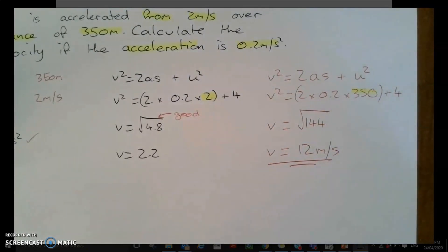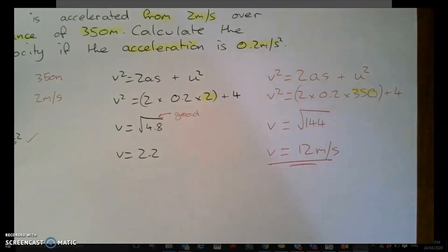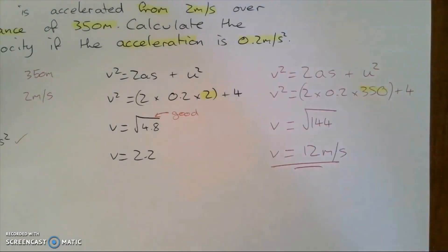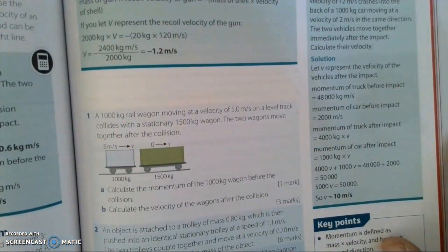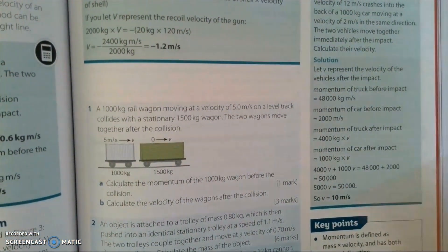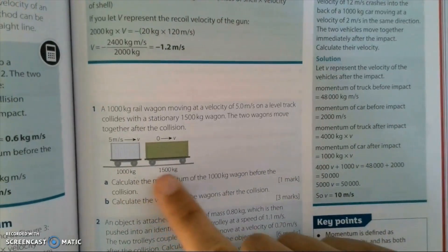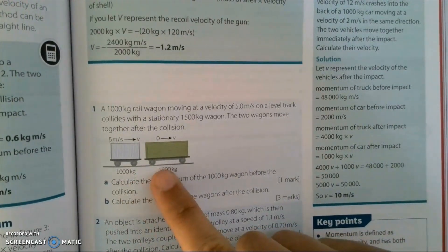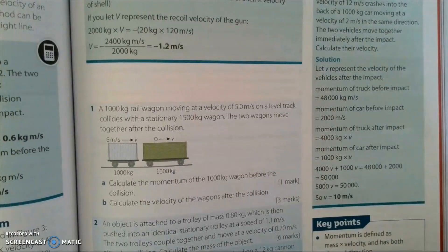The next problem I'm going to go on to is going through a complicated problem from a worksheet, exam or textbook. Here is a problem from the textbook — a typical conservation of momentum problem. As you can see, it's got two trucks or wagons. They're going to hit each other, stick together, and we're going to find the velocity after the collision.